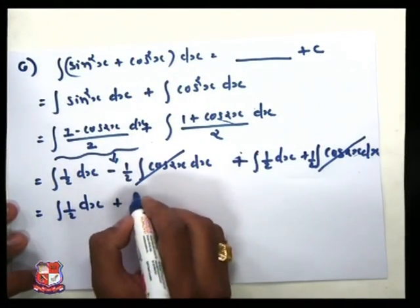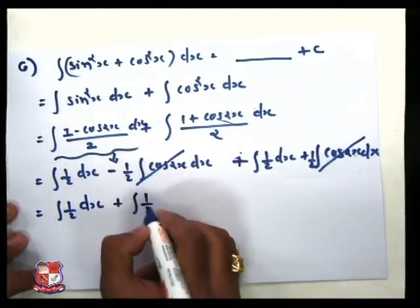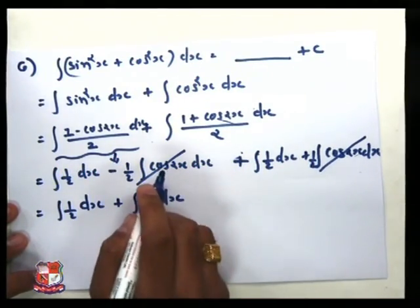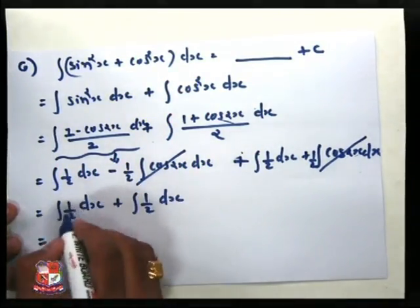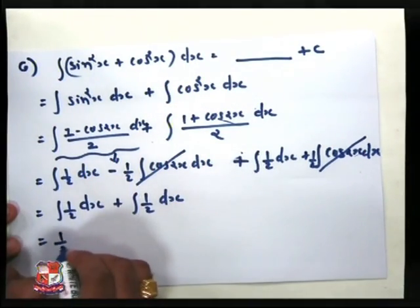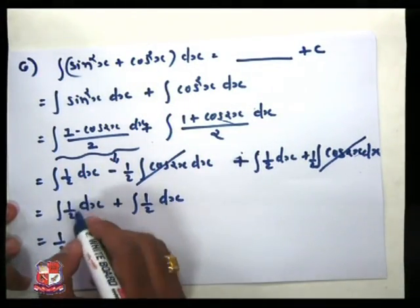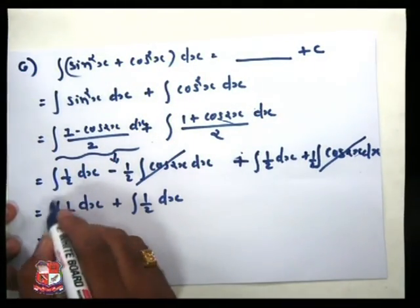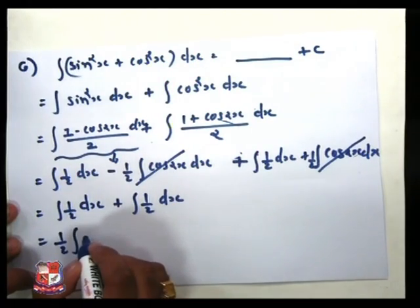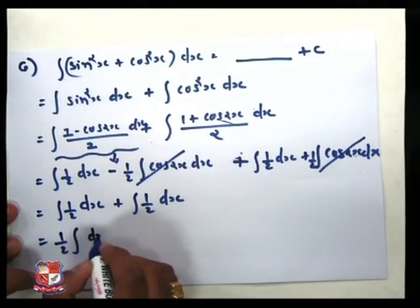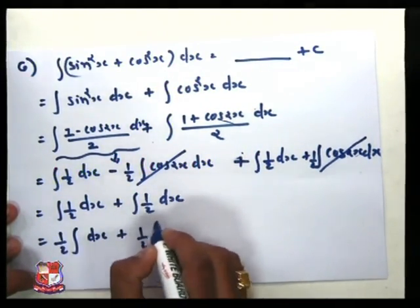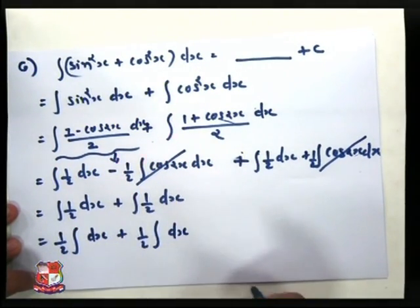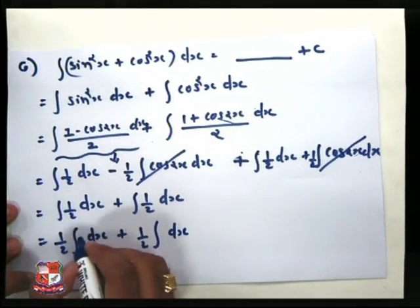So our final term is integration of 1 by 2 dx plus 1 by 2 dx. The constant 1 by 2 plus 1 by 2 equals 1, taken outside the integral, gives integration of dx, which equals x plus c.